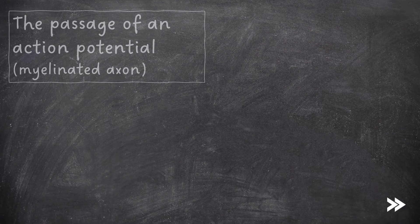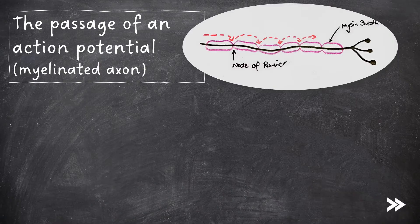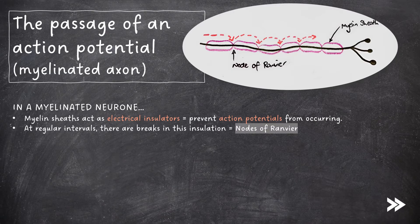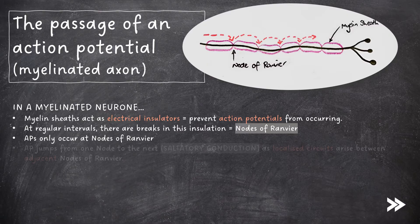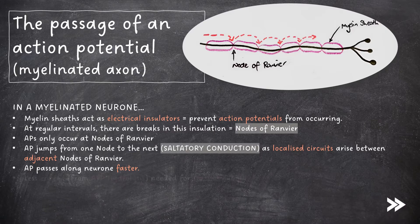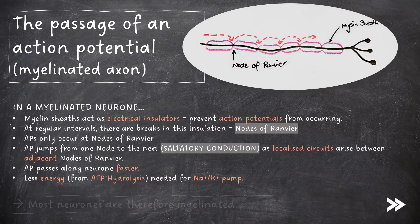Next we need to consider how an action potential travels in a myelinated neuron. Myelin sheaths act as electrical insulators, preventing action potentials from occurring. At regular intervals, there are breaks in this insulation which are called nodes of Ranvier. Action potentials can only occur at these nodes of Ranvier. Therefore, the action potential jumps from one node to the next, which is known as saltatory conduction. This is because localised circuits arise between adjacent nodes of Ranvier. Therefore the action potential passes along the neuron faster, and less energy from ATP hydrolysis is needed to power the sodium-potassium pump. Most neurons therefore are myelinated.